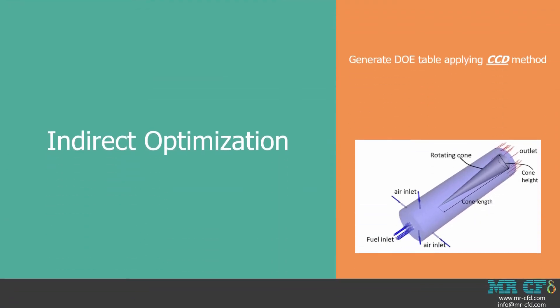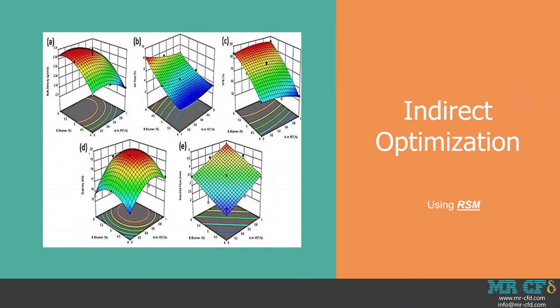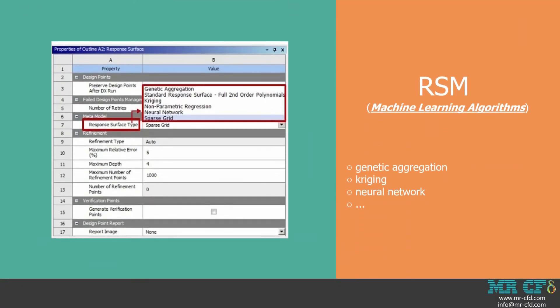In our example of optimizing the combustion chamber, we first use the Central Composite Design or CCD method to generate the DOE table which has fewer experiments than the direct method's DOE table. Then we use the Response Surface Methodology to perform the optimization process. The RSM method uses machine learning algorithms such as genetic aggregation, kriging, neural network, etc. to obtain a mathematical function that defines the targets based on the input parameters and shows this function through a surface.